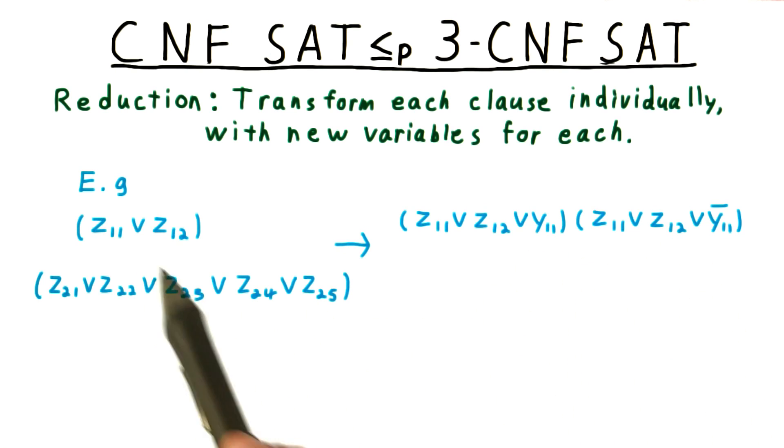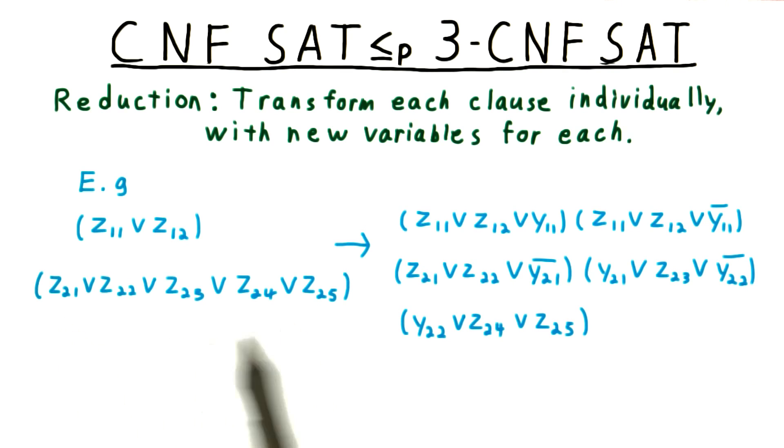It gets the first one because it was generated by the first clause. We transform the second clause with five literals into these three clauses introducing two new variables, y21 and y22. Note that these are different from the variables used in the clauses generated by the first original clause.